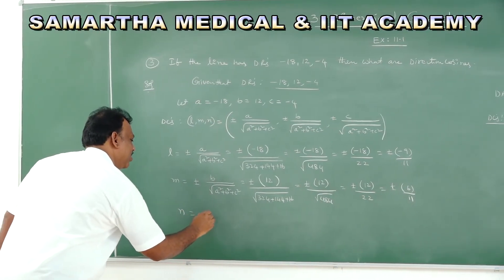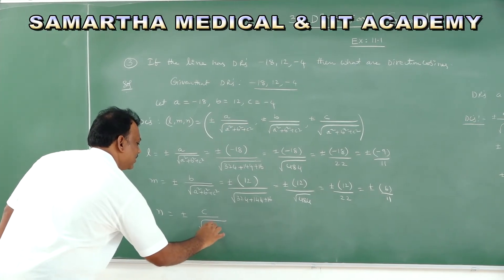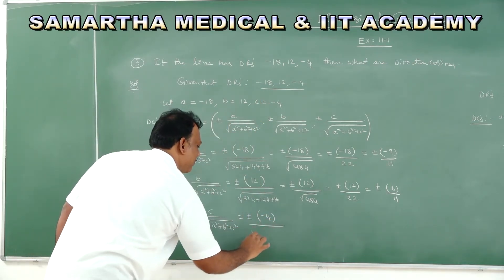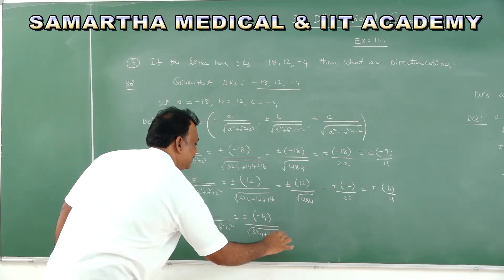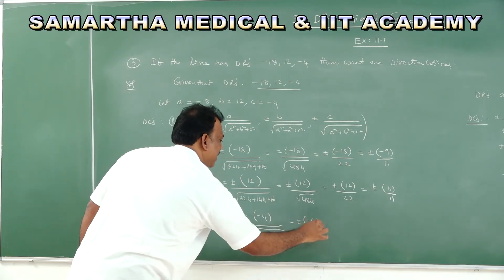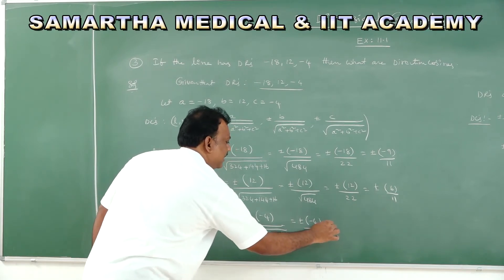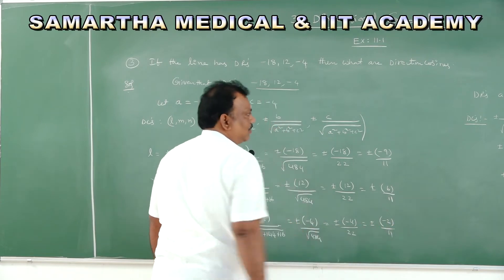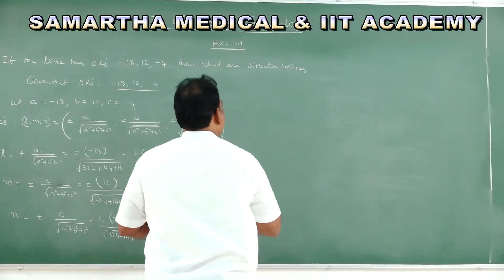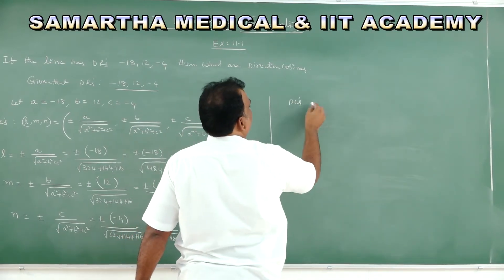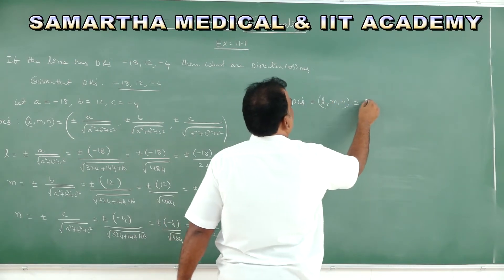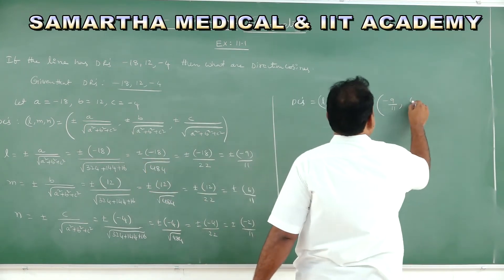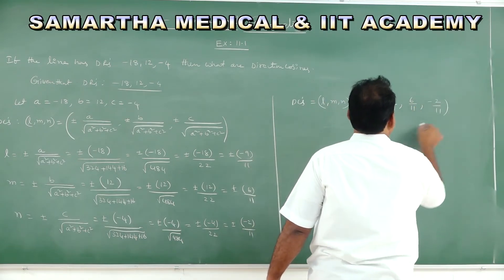Therefore, direction cosines (L, M, N) = ±(−9/11, 6/11, −2/11). This is the required answer.